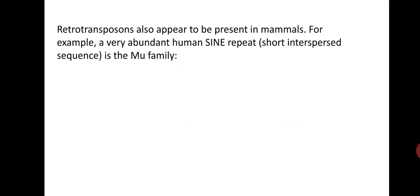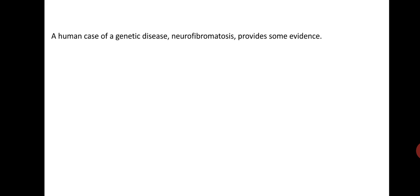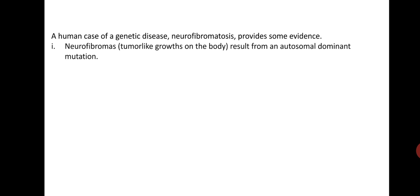Retrotransposons also appear to be present in mammals. For example, very abundant human SINE repeats — short interspersed nuclear sequences — belong to the mu family. A human genetic disease, neurofibromatosis, provides some evidence of this, as neurofibromatosis involves tumor-like growths on the body resulting from an autosomal dominant mutation.